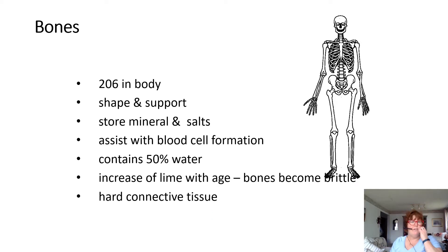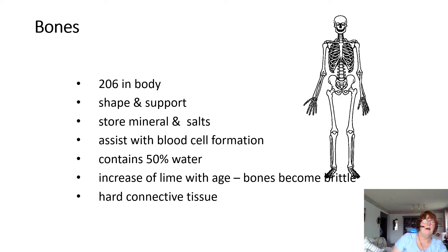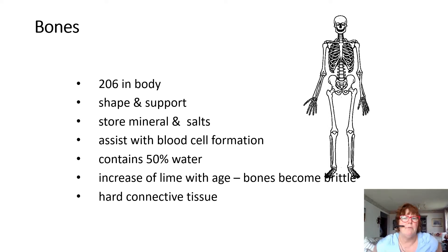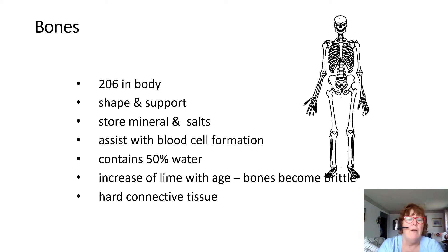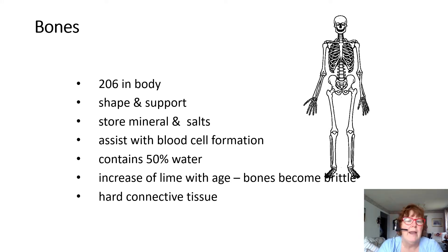There are 206 bones in the body. They give us shape and support, store minerals and salts. Our large bones produce blood cells and assist with blood formation. They also contain about 50% water, and as we age they increase in lime and become very brittle.